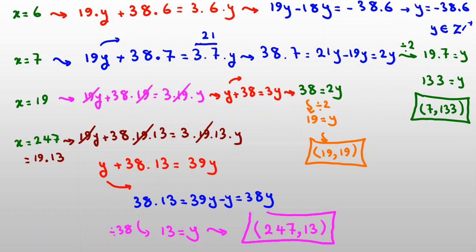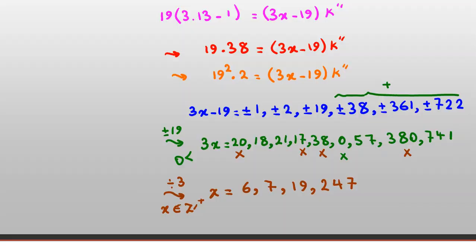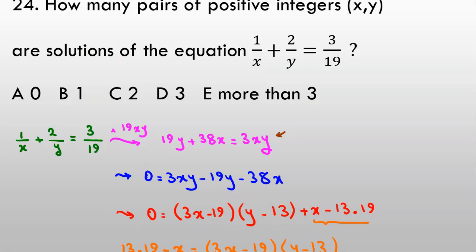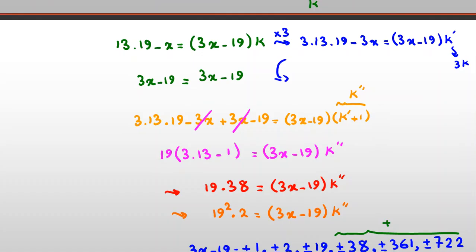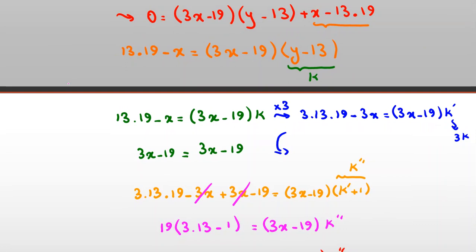We found 3 valid pairs: (x=7, y=133), (x=19, y=19), and (x=247, y=13). The answer is 3. That was solution 1. Now I want to show the same key step using divisibility for solution 2.